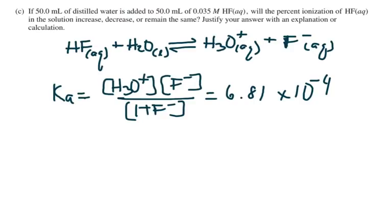Part C says: if 50 milliliters of distilled water is added to 50 milliliters of our 0.035 molar HF solution, will the percent ionization increase, decrease, or remain the same? Justify your answer. We're going to go back and dilute this down — double the volume, so concentrations are halved. To figure out which way equilibrium shifts, we're going to calculate Q.